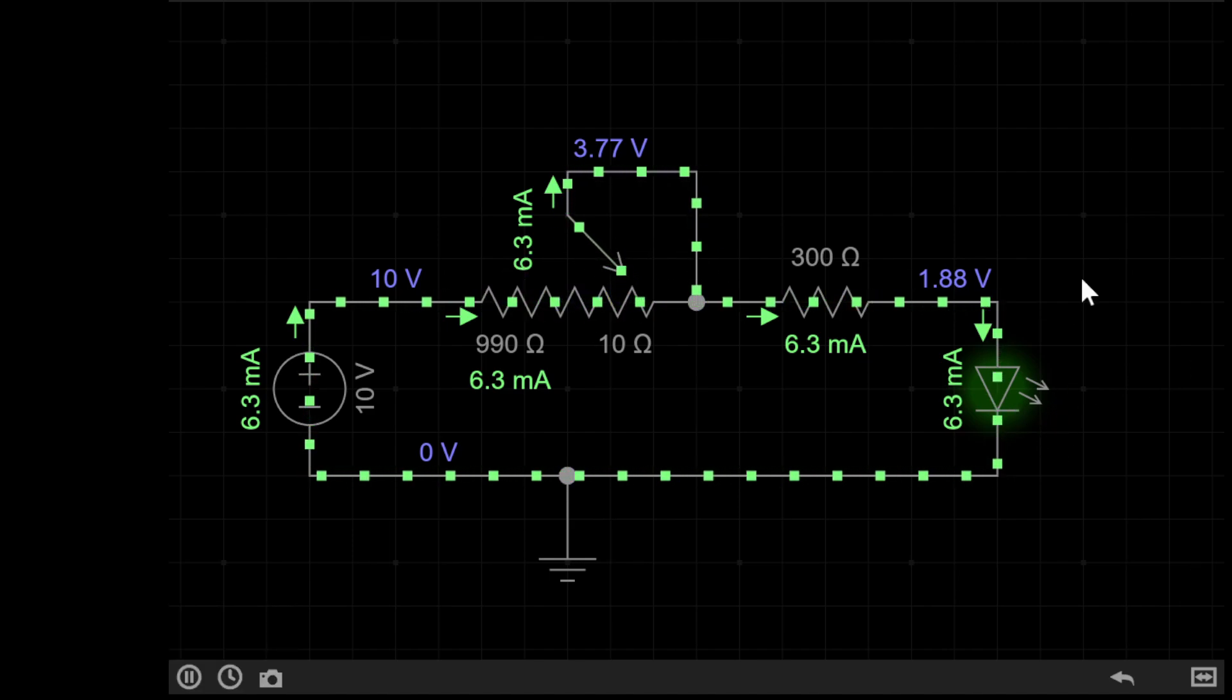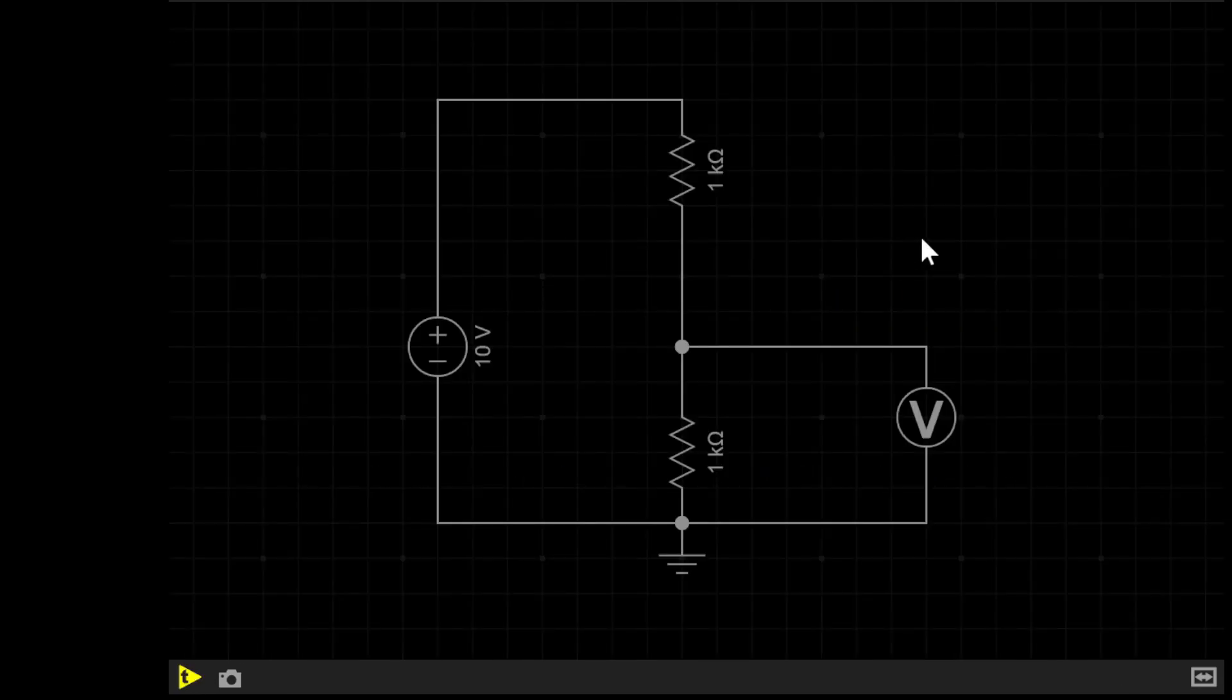So we just use a pot to control current, but they're actually more commonly used to control voltage. This is a standard voltage divider circuit, consisting of two 1k resistors and a 10 volt supply. I have made a video on voltage dividers before, and it's in the description below.